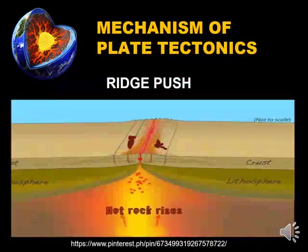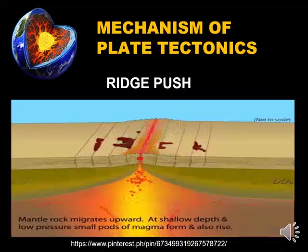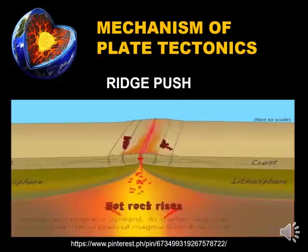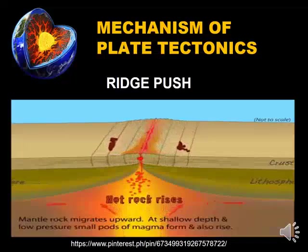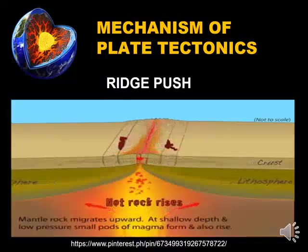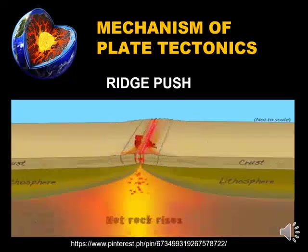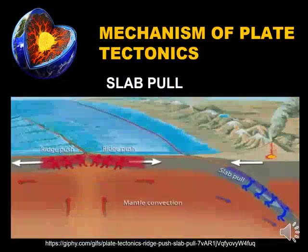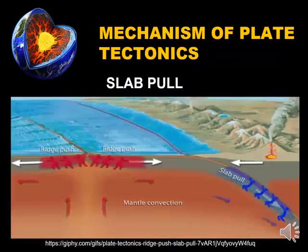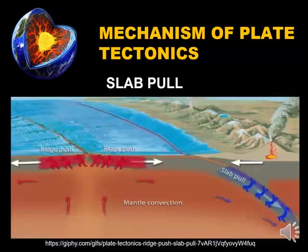Ridge Push happens when hot, buoyant mantle lifts and pushes the plates apart at mid-ocean ridges, where magma solidifies to form new oceanic lithosphere. Gravity pulls the oceanic plates downhill from the ridges towards the deep ocean trenches, or downhill from uplifted continental rift zones like the East African Rift. Slab Pull takes place when the relatively cool and dense oceanic plates, or slabs, have negative buoyancy after subducting at ocean trenches and sink into the ductile, less dense asthenosphere, pulling the rest of the tectonic plates along behind it.